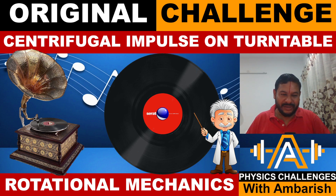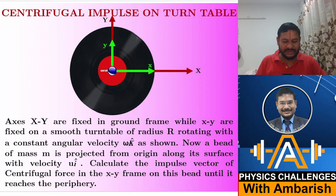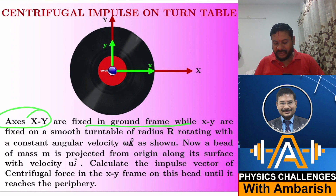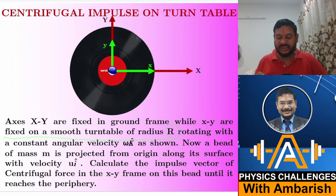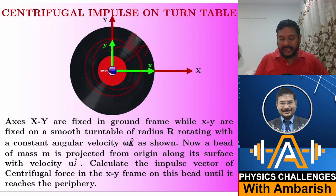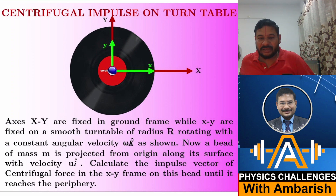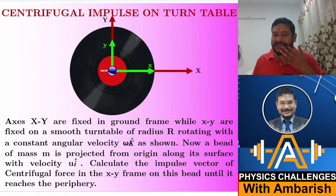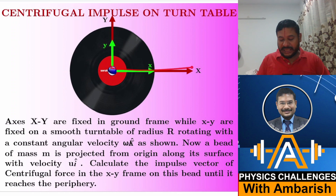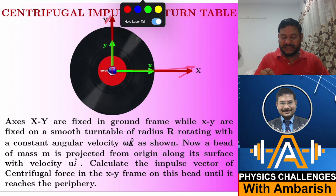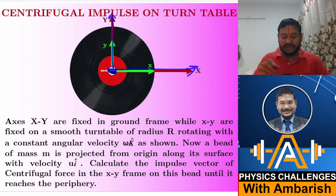Here's the challenge: centrifugal impulse on a turntable. The axes X and Y are fixed in the ground frame, while small x and small y are fixed on a smooth turntable of radius capital R. The green axes (small x, small y) rotate with the turntable — they are fixed in the frame of the turntable. Capital X and Y are fixed with respect to the ground.